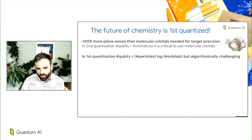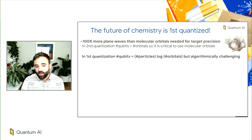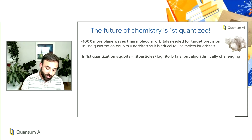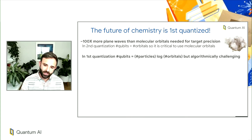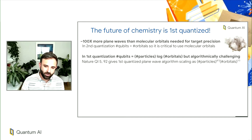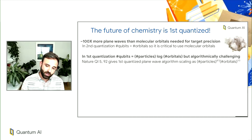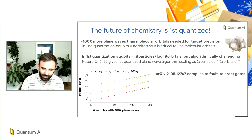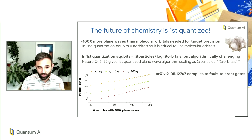However, there's a different way to encode the system physics using first quantization. None of the prior works doing error-corrected resource estimates have looked at first quantization up to this point. In first quantization, the number of qubits required is the number of particles times the log of the number of basis functions — exponentially better scaling in terms of basis functions. But it can be very challenging algorithmically because the Hamiltonians in this representation are no longer local. In 2018, we described a method performing simulation in this representation with gate complexity scaling as n^(1/3). It then took about two and a half years and about 100 single-spaced paper pages to figure out the constant factors and compile it to an error-correcting code.